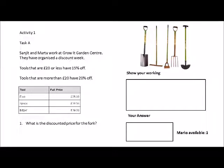So the first thing we do when we do our percentages — I want you to remember this sequence: we divide, we times, then we minus. The first part is dividing. We take our percentage and divide it by 100. Then we times our result by the price of the fork, which would be £25. And with that result, we subtract it from the actual price of the fork.